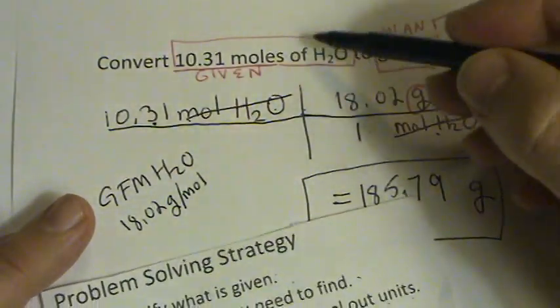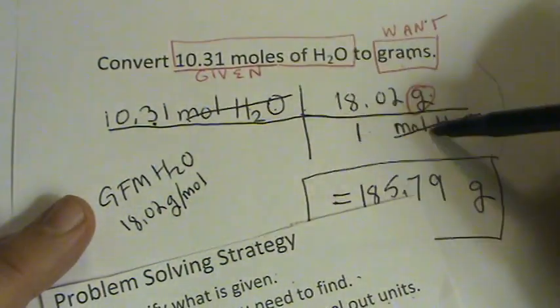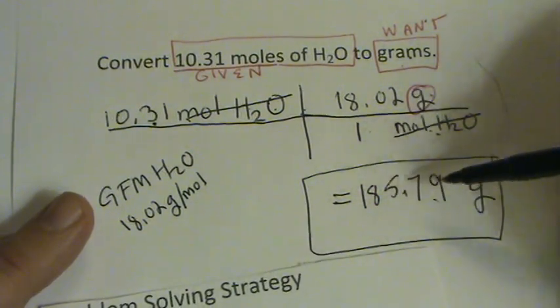And there we have the answer. So what we've done is we've identified what we're given, what we want. We've set up the problem to cancel these out. Did our math. And now we need to see if this 185 number makes sense.